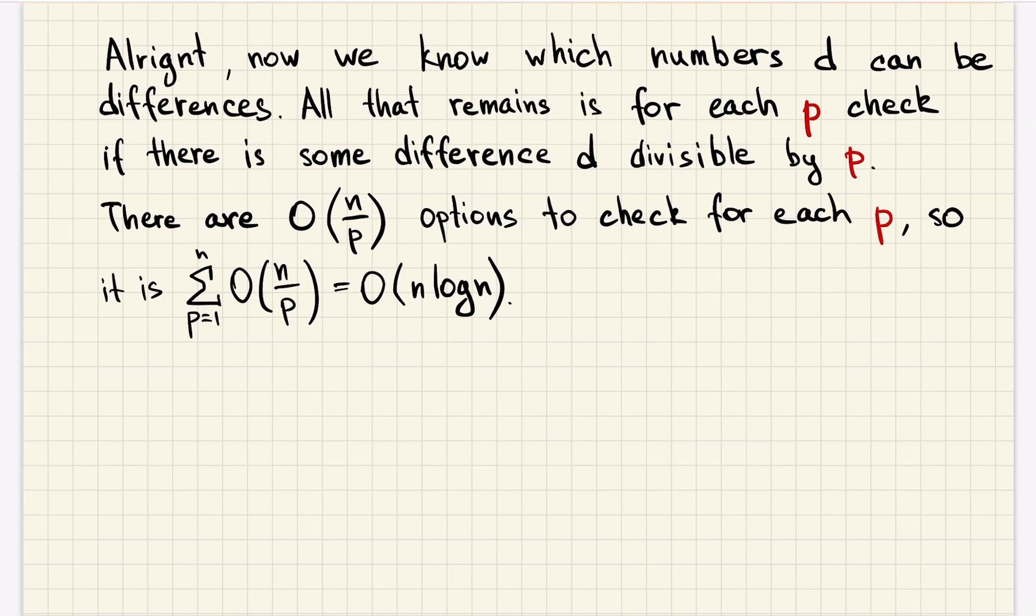All that remains is for each p to check if there is some difference d that will make this p bad. And that would happen if d is an achievable difference and d is divisible by p.